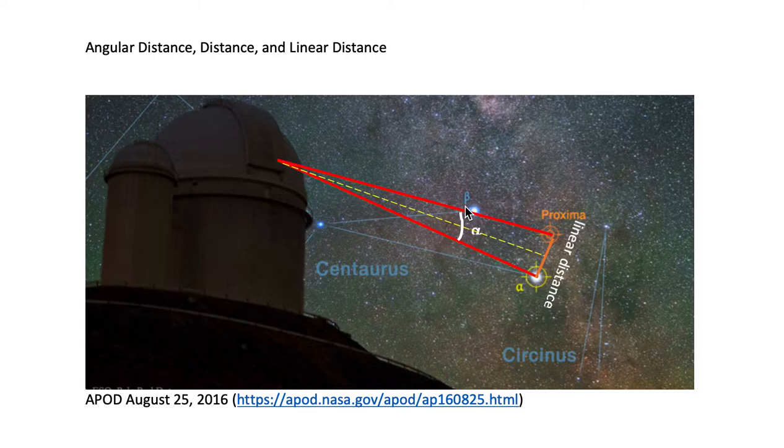is subtended by an angle in the sky labeled Alpha in white. This is the angle, the angular distance between the two stars, Proxima Centauri and Alpha Centauri.